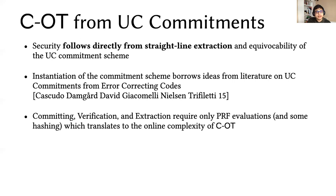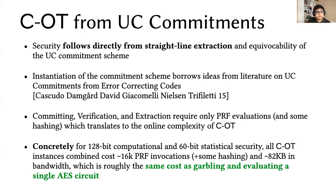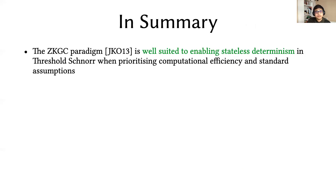Committing, verifying, and extraction requires only PRF evaluations, which is really nice, and some hashing. This translates to really good efficiency and the online complexity of committed OT, which is what we were looking for. Concretely, for the parameters that we care about, you can think of the computation and bandwidth cost as about the same as garbling a single AES circuit, which is significantly cheaper than actually garbling AES with the PRF because we will need multiple AES invocations to derive an unbiased nonce.